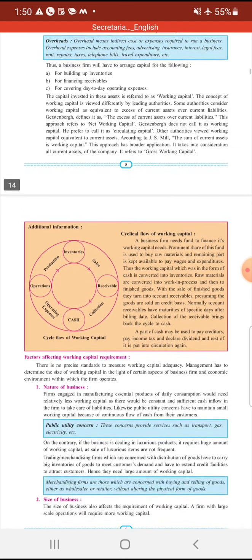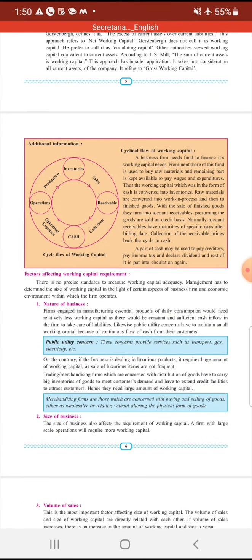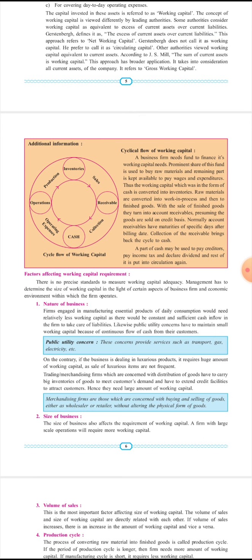अब आगे हम देखते हैं cyclic flow of working capital। A business firm needs fund to finance its working capital needs. Prominent share of this fund is used to buy raw material and remaining part is kept available to pay wages and expenditure। Working capital का एक बड़ा हिस्सा raw material को खरीदने के लिए use किया जाता है और बचा हुआ हिस्सा अलग-अलग payments करने के लिए किया जाता है।